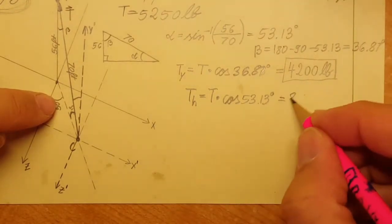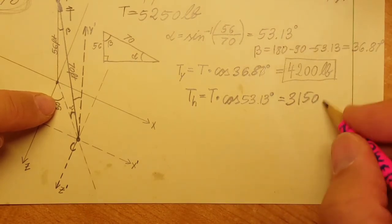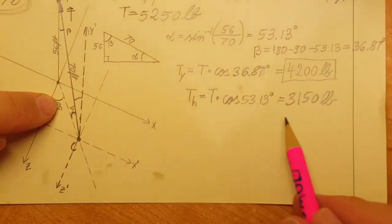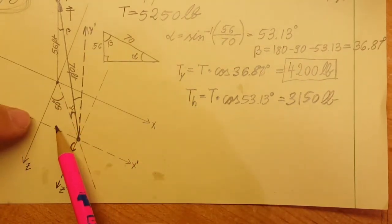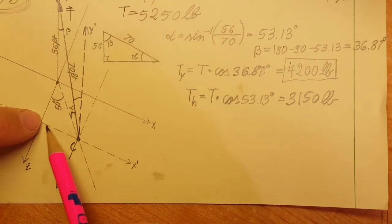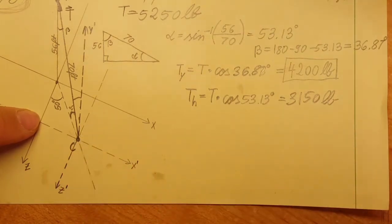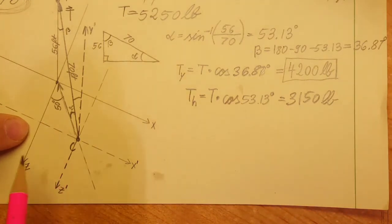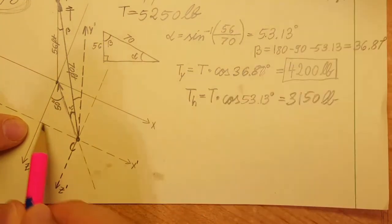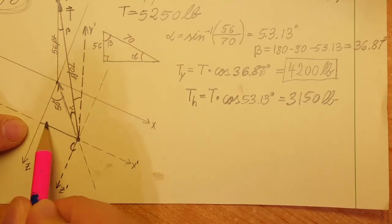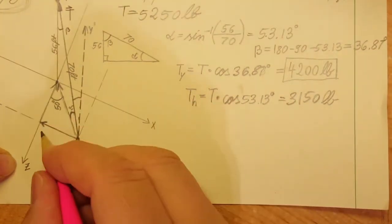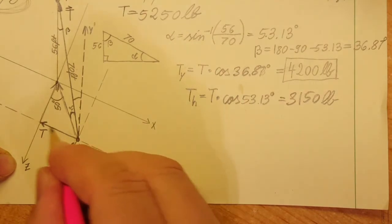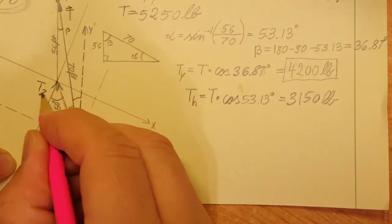This will help us break it up. We're going to be able to find our component with respect to x and the other one with respect to z. My x component is right here and the z component is right here.